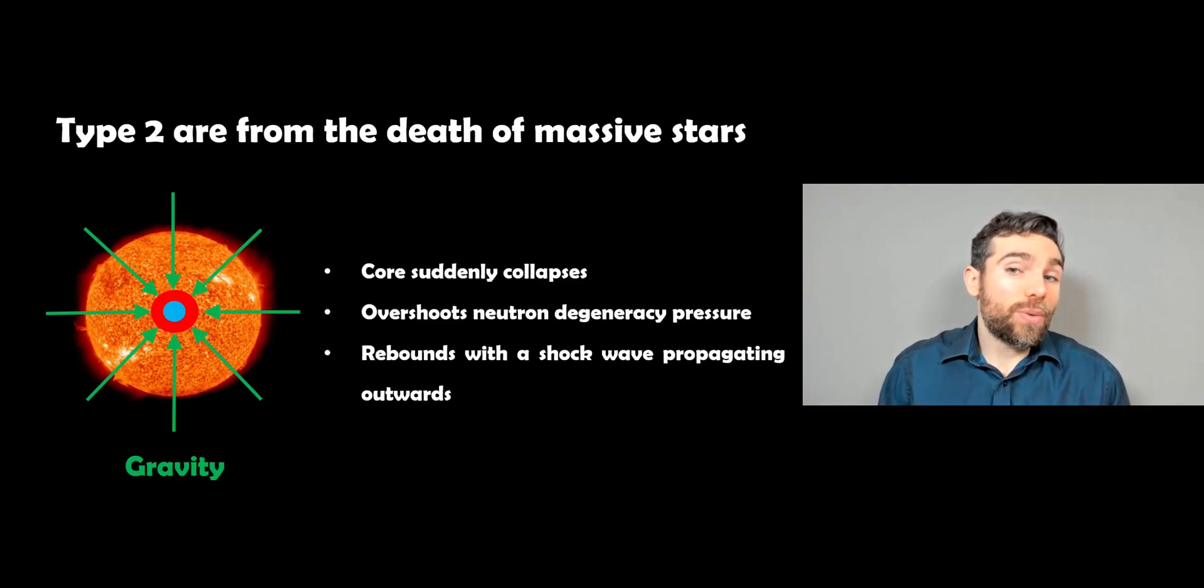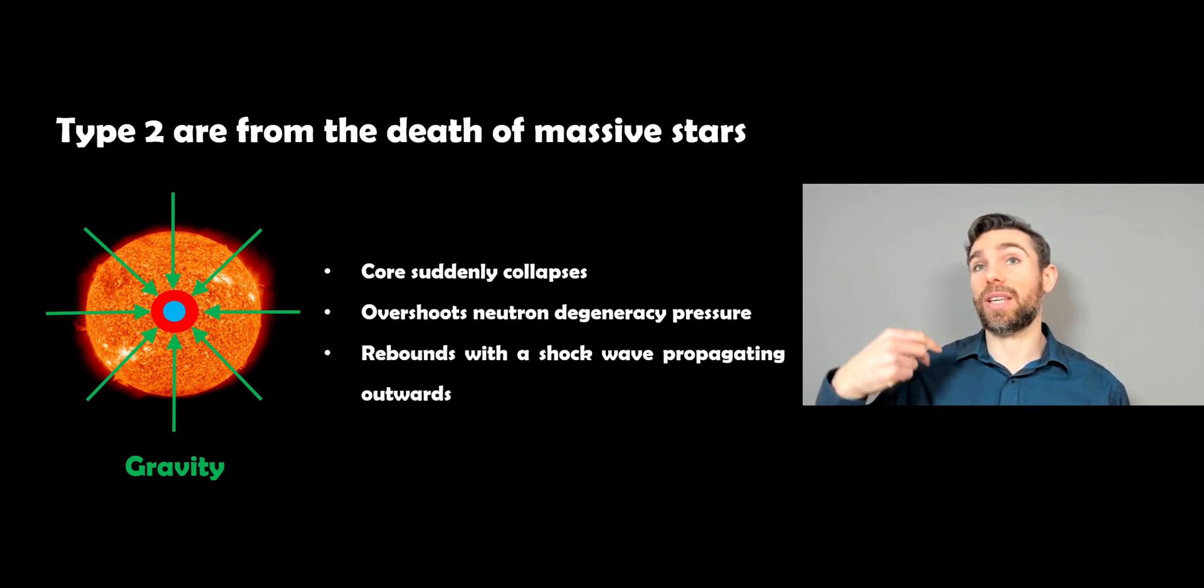Now the type 2, so this is going to be from the death of a massive star. So these are stars much more massive than our Sun and what happens here is they reach the end of fusion in their core, they're no longer generating any outward pressure to balance against the gravitational force trying to collapse it.